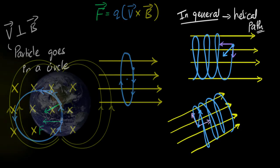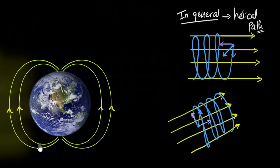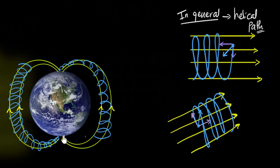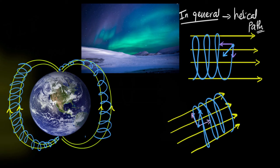Now let's see why we only get auroras at the poles. It has something to do with Earth's magnetic field. Sometimes the Sun launches charged particles, and once they enter Earth's magnetic field, they get trapped — they start following the field in a helical path, all the way toward the poles. That's where they enter into the atmosphere. When these charged particles enter the atmosphere, they interact with it, causing these beautiful auroras. That's why we only see them at the poles. Beautiful, isn't it?